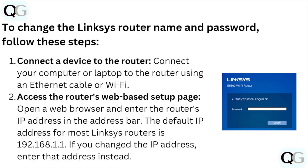Step one: connect a device to the router. Connect your computer or laptop to the router using an Ethernet cable or Wi-Fi. Step two: access the router's web-based setup page. Open your web browser and enter the router's IP address in the address bar.